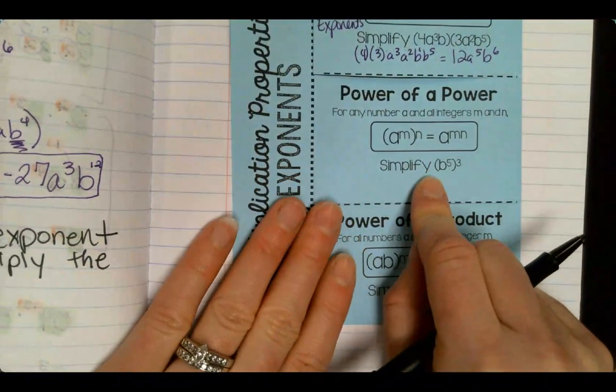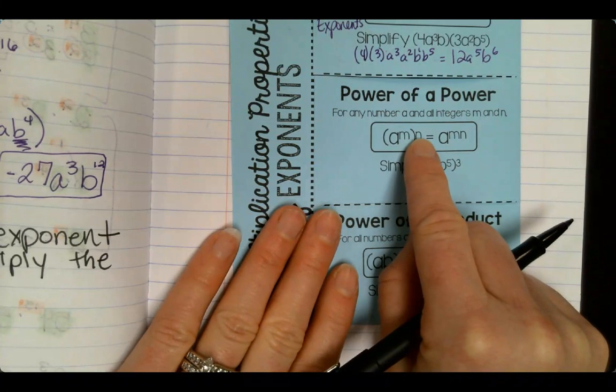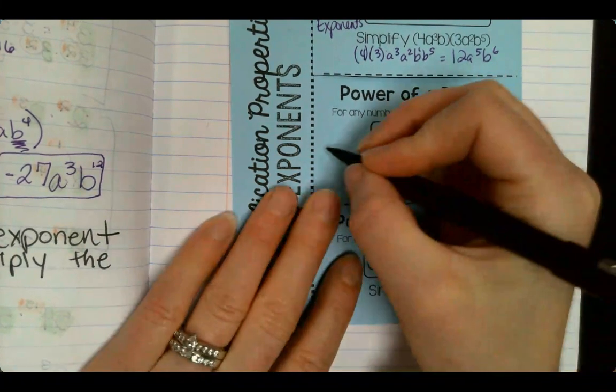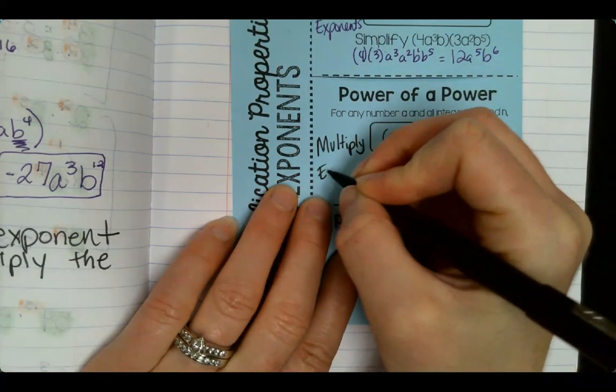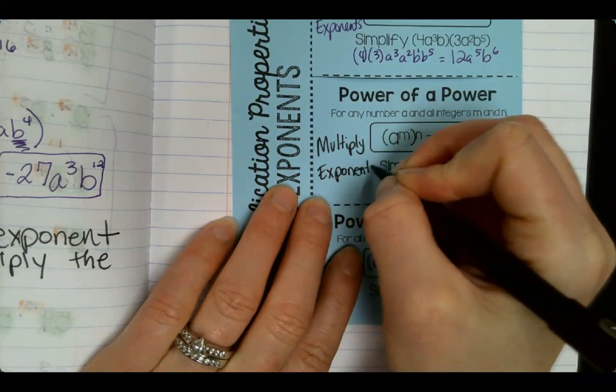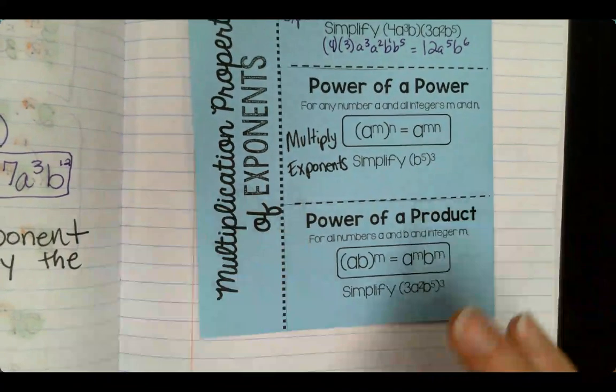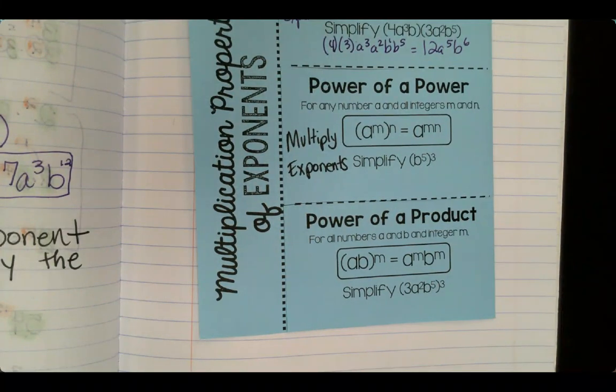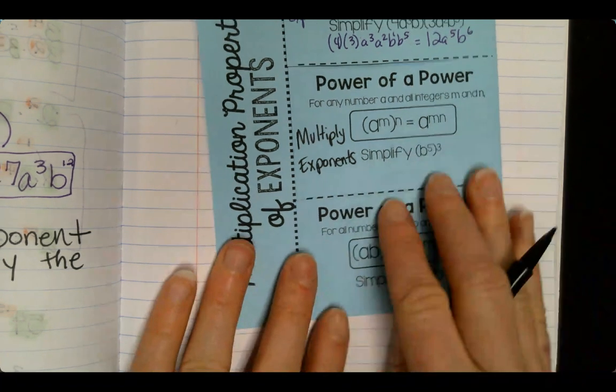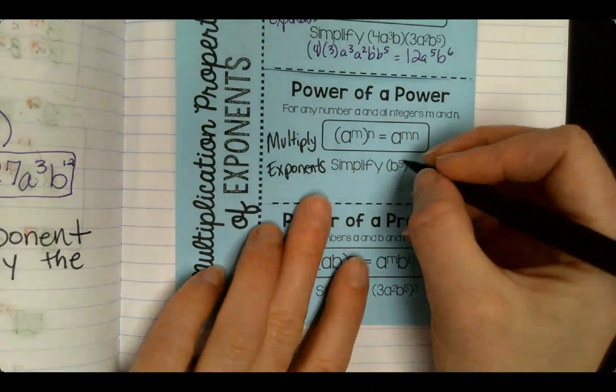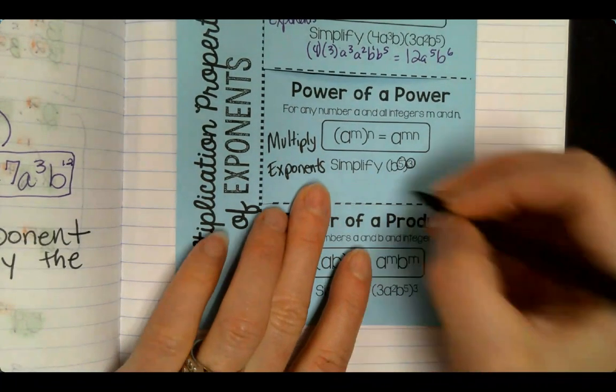All right, so let's go ahead and look at our foldable. We're going to finish this. So it says a to the m to the n equals a to the mn. We are going to multiply exponents. So on this example, we have b to the 5th to the 3rd. Multiply these. You get b15.